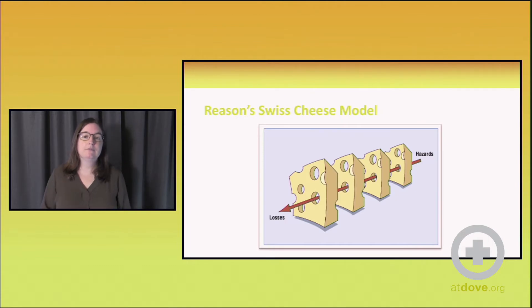He developed this classic model of how errors actually occur in organizations called the Swiss cheese model. The way to think about errors happening is having layers of defenses like slices of Swiss cheese. Those slices of cheese are barriers to errors actually happening. So if the risk is over on that right-hand side,